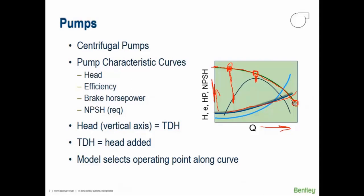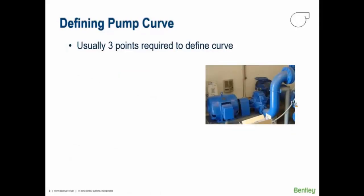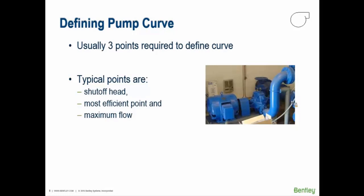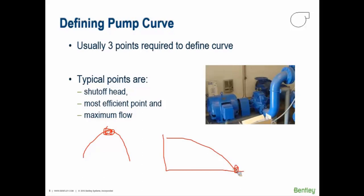In WaterCAD and WaterGEMS you typically use three points to define the pump curve: the shutoff head (where the pump shuts off when pressure reaches a high point), the most efficient point (the peak of the bell curve), and the maximum flow or runout point. Maximum flow doesn't necessarily mean where the curve hits the axis at near-zero head — pumps will trip off before that. Refer to the pump manufacturer catalog for the actual maximum flow.